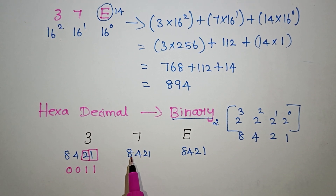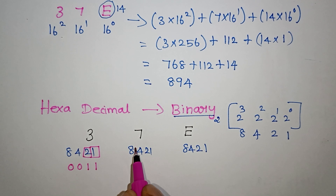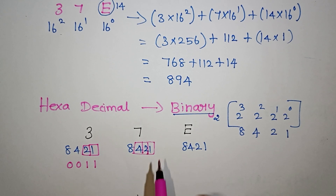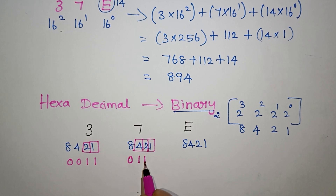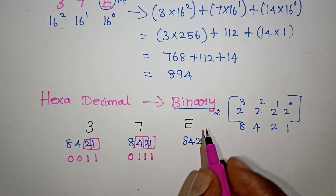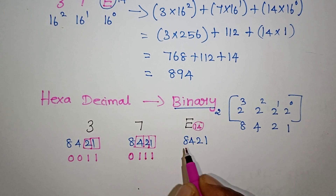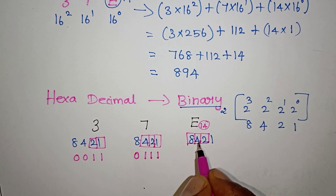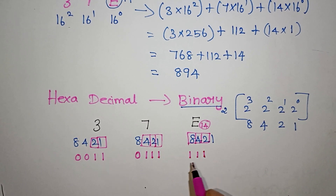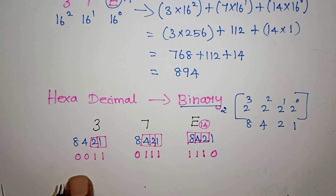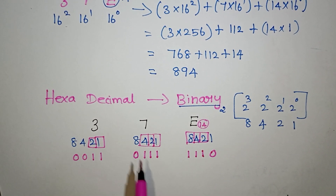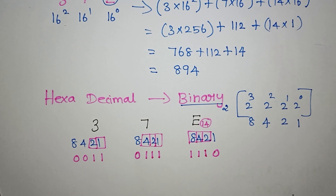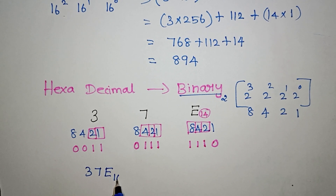For the number conversion, we use groups of 8, 4, 2, 1 and mark each position as 0 or 1. The number 14 maps to binary 1110, since 8 plus 4 plus 2 equals 14. After converting all digits, the binary result gives us the hexadecimal form 837E.